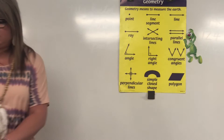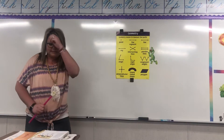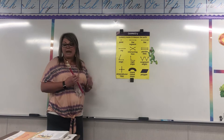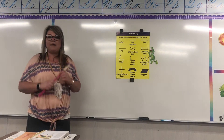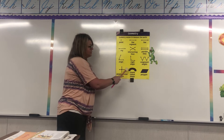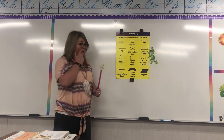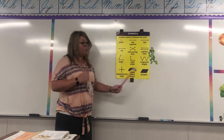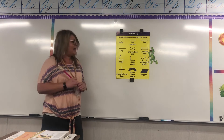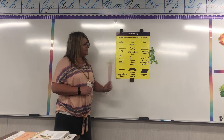Now if you'll flip over to your page for tomorrow you can kind of go along with me there. Now a simple closed curve or shape is something that does not have any intersecting lines — as you can see none of these lines intersect. And then you also have a polygon, which your book says is made up of a closed curve made up of line segments. So these are just made up of different line segments.